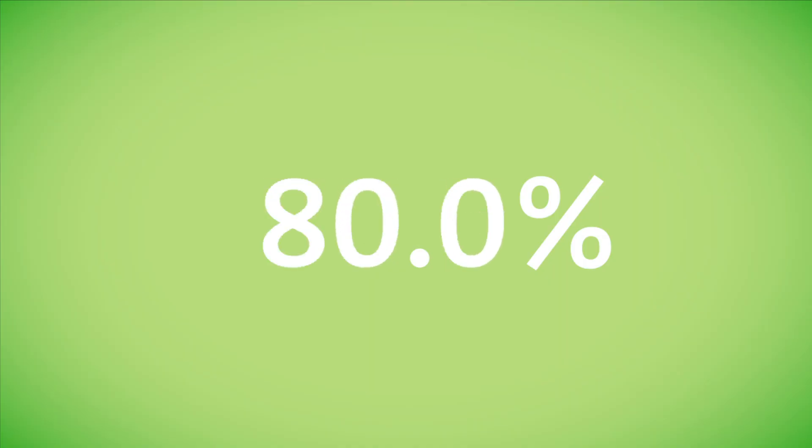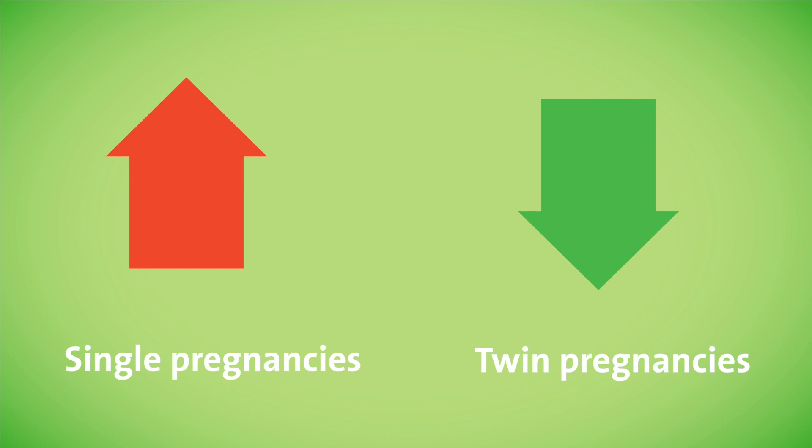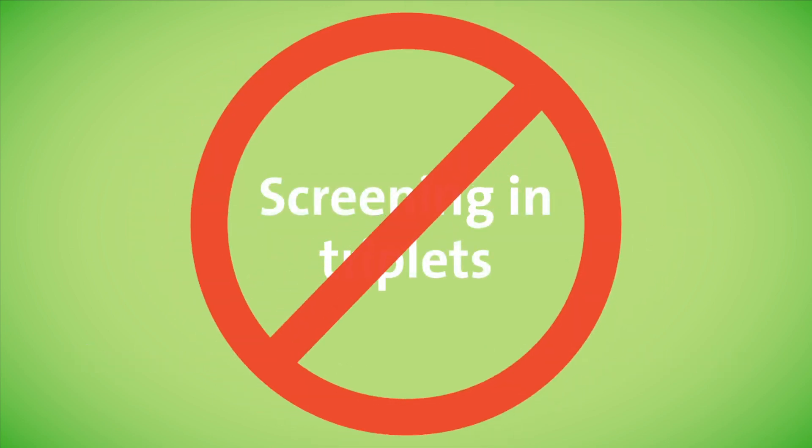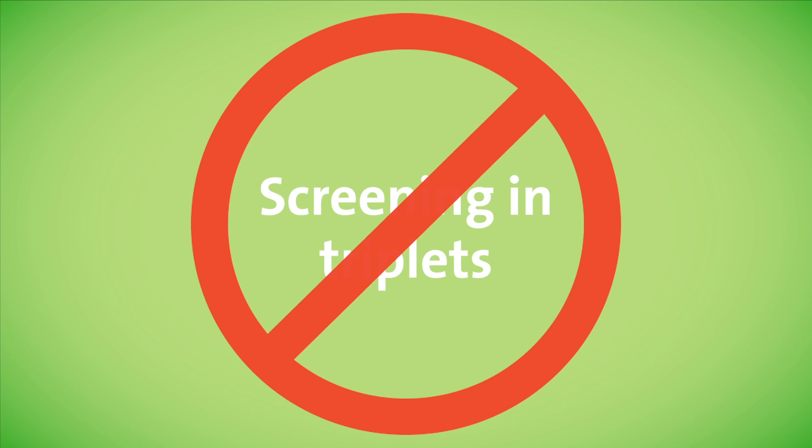The detection rates vary depending on which screening test is performed. Detection rates are higher in single pregnancies and decrease in twin pregnancies. Most screening tests cannot be performed in higher order multiples like triplets.